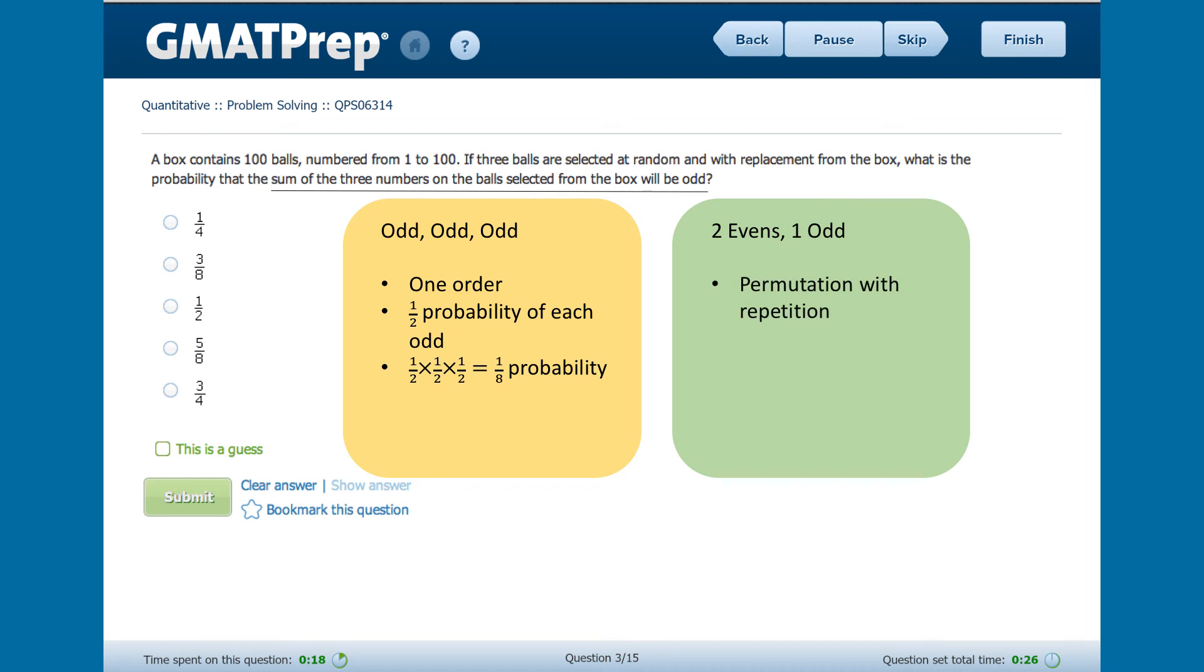All right, again, just like on the combinations problem, we have a small total with a relatively large number of repeats, so we could pretty easily list out our possible permutations to find the probability of each, like we did with the all odd option above. This works perfectly and goes quickly.